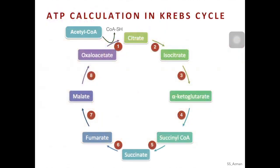After the link reaction, we have the Krebs cycle. The Krebs cycle starts when the product of the link reaction, acetyl-CoA, is added to oxaloacetate to produce a citrate molecule. Since we have 2 acetyl-CoA, we need 2 molecules of oxaloacetate to produce 2 molecules of citrate. The same numbers apply to subsequent products: 2 citrate → 2 isocitrate → 2 alpha-ketoglutarate → 2 succinyl-CoA → 2 succinate → 2 fumarate → 2 malate.